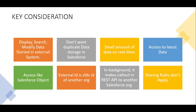When you use Salesforce Connect, it creates an external object for you, which is like a cousin of a Salesforce object. It also creates an external ID, which is used to connect to a standard or custom Salesforce object. In the background, it makes a callout via REST API to another Salesforce org — that happens in the background so we don't need to worry about it. One last point: sharing rules don't apply to external object rows; the only controls you have are OWD and field-level security.